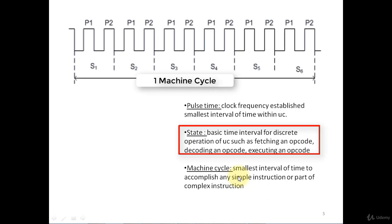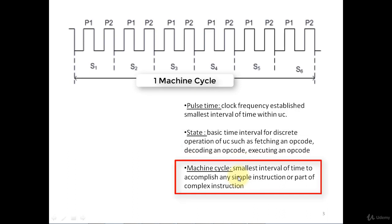Here, opcode is nothing but the operational code which is an 8 bit value which indicates the operation to be performed by 8051 microcontroller. Machine cycle is the smallest interval of time to accomplish any simple instruction or the part of complex instruction.